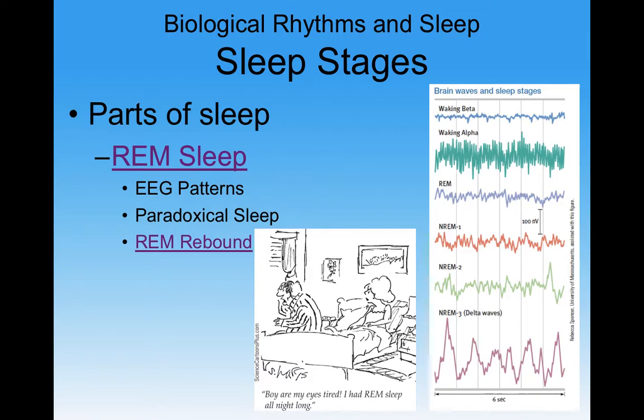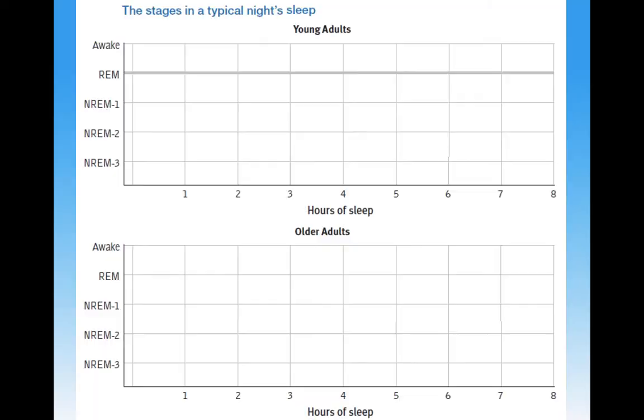Finally, REM rebound. If we stay up for a long period of time — say studying or pulling an all-nighter, being awake for 20, 24, maybe 30 hours — when we go to sleep, our brain is going to go to REM quicker. REM is our most valuable part of sleep. It's when our body is in recuperation mode, repairing itself, and the brain is storing things from the previous day. REM is really the magical time where all the good things happen — all the benefits we get from sleep are really occurring in REM sleep.